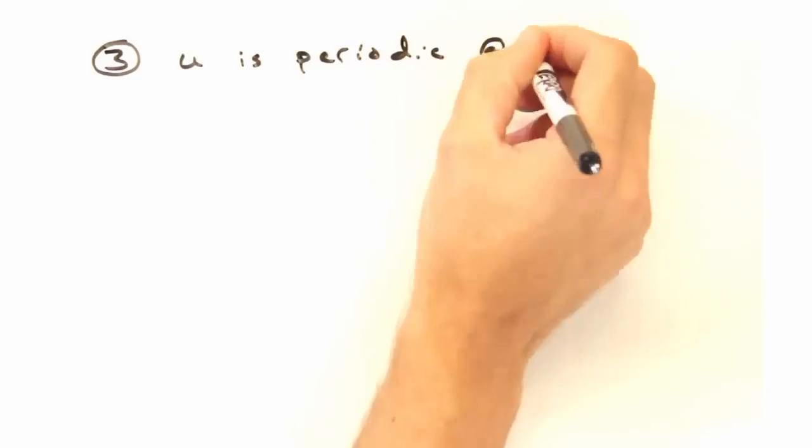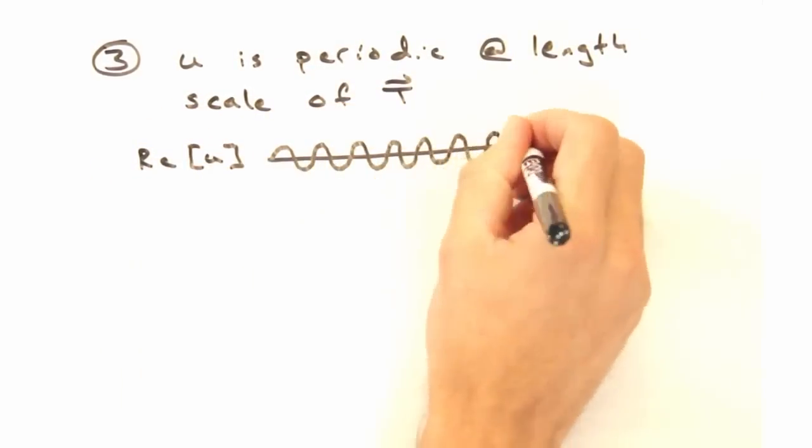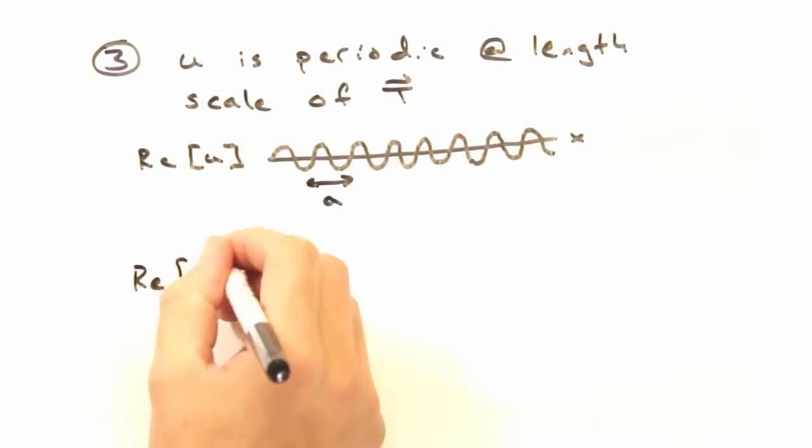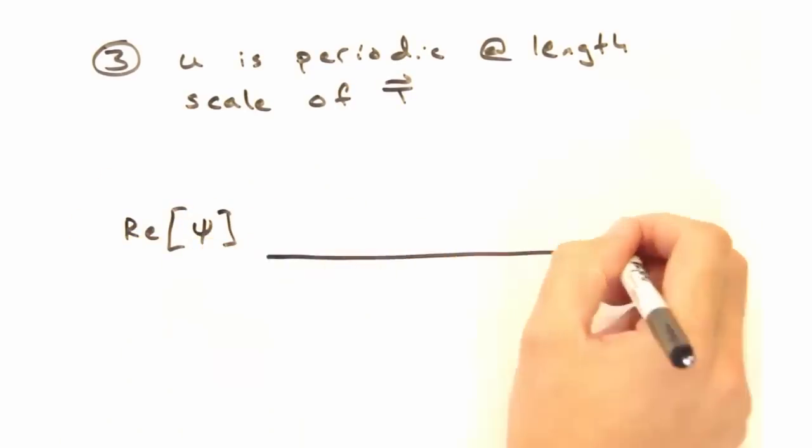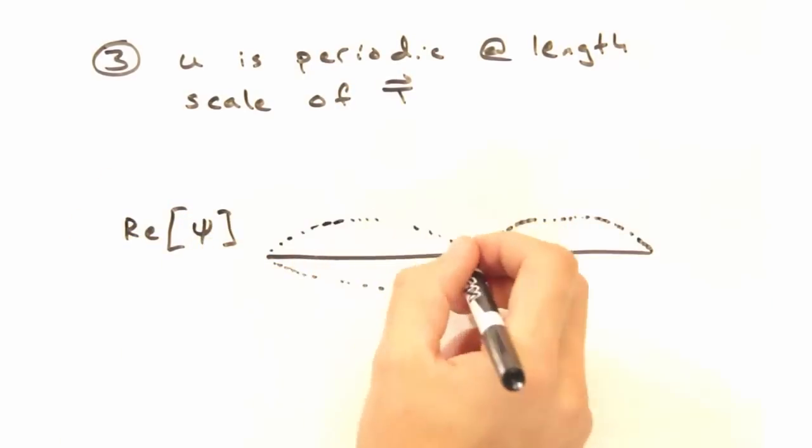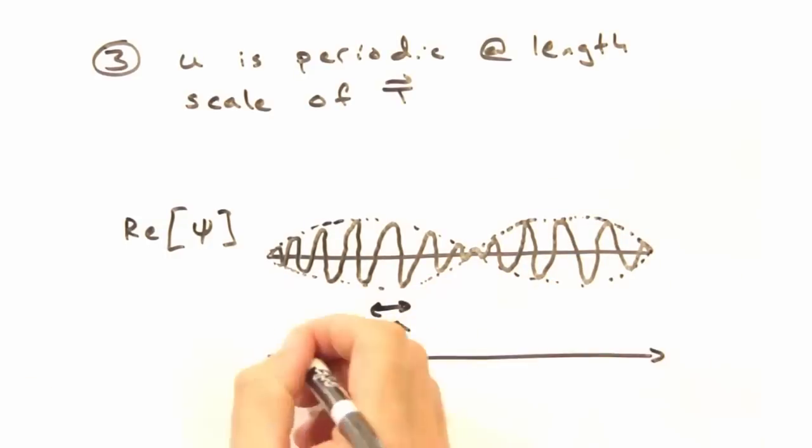And so the third comment we want to make is about visualizing our Bloch waves. U is ultimately some periodic wave that repeats at the atomic scale while the real part of e to the i k dot r is periodic on the sample scale. Multiplying these two waveforms together, we get the real part of our Bloch wave. And this allows us to visualize how the wave function is modulated.